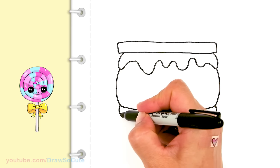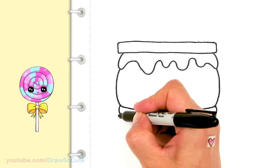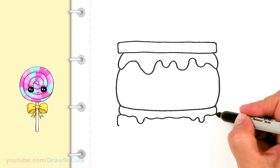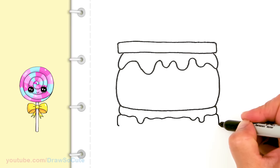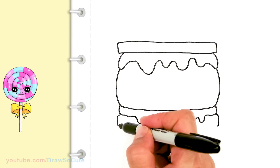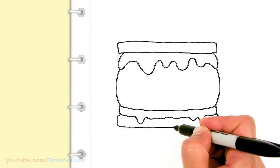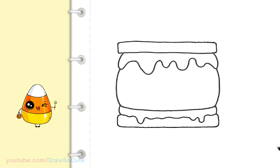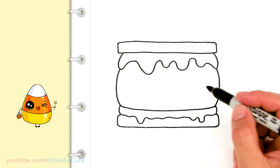And then now the last layer, another layer of graham cracker. Once again the same thing, just soften the edges a little bit and connect it straight across. And that is pretty much it for your s'mores.